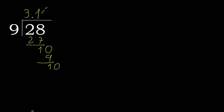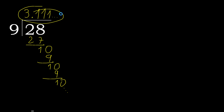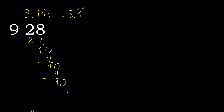10: 9 multiplied by 1 is 9. Subtract, complete, and it repeats. Therefore it repeats — 28 divided by 9 is, after the decimal point, 1 repeating. Therefore, the answer is like this.